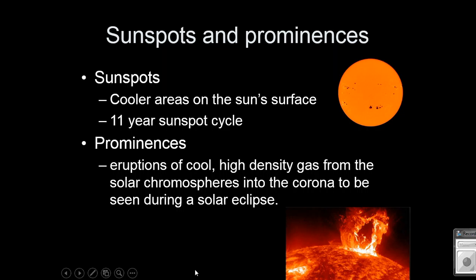So sunspots happen in a cycle. You're going to learn a lot more about sunspots and the activity this week. But here are our sunspots. They're darker activities. They're cooler areas on the surface of the sun.